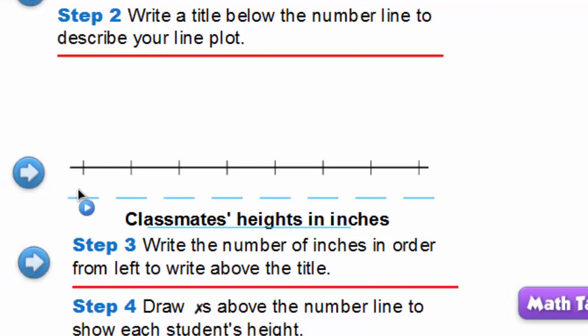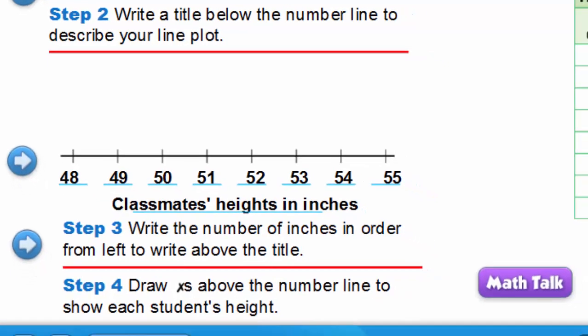We start with the least number which is 48, the greatest number which is 55, and we write them in order from least to greatest. 48, 49, all the way to 55. Then we draw X's above the number line to show each student height.